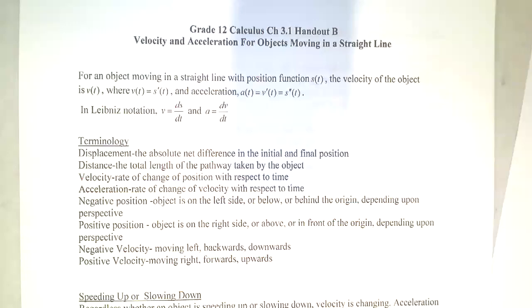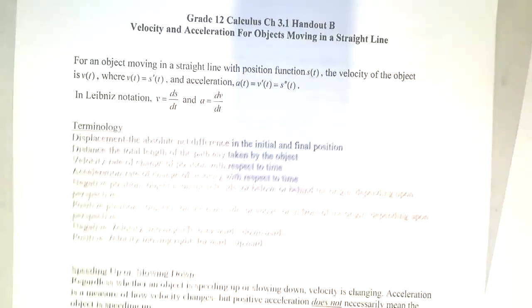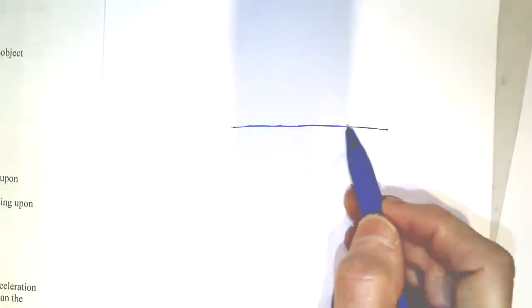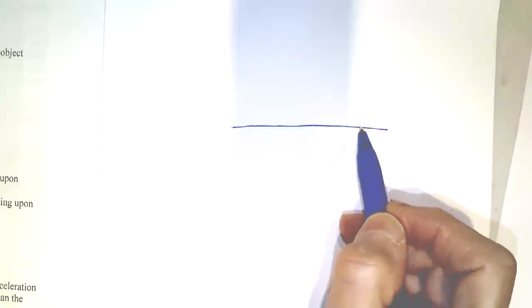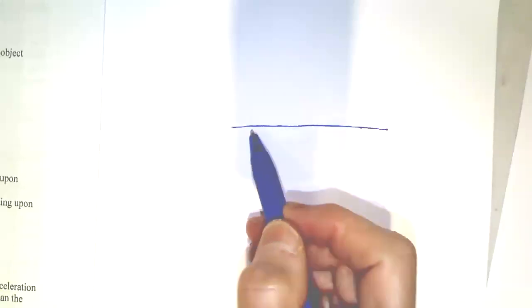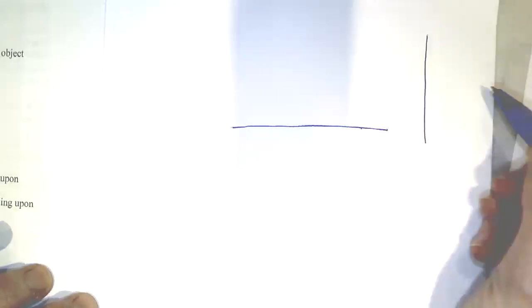We're looking at an object that's moving. Think of a toy train on train tracks, where the train can move along the tracks, but then it has to stop, and then go back. It can only go to the right or the left — that's what we call motion in a straight line. Of course, motion in a straight line could also be vertical, for example if you threw a ball up in the air or dropped a ball straight down.